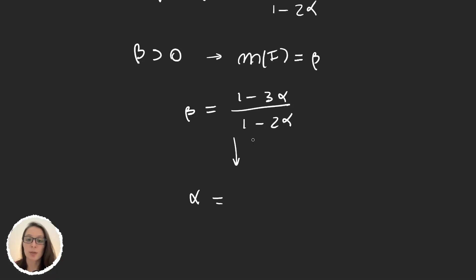And this is just a Möbius transform or a matrix if you want. So α will be equal to (β - 1)/(2β - 3).